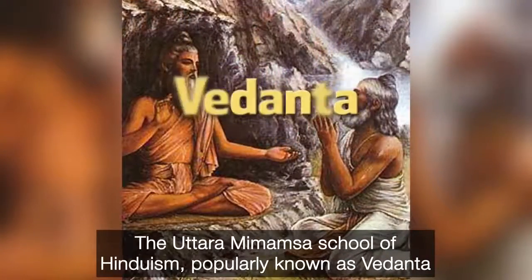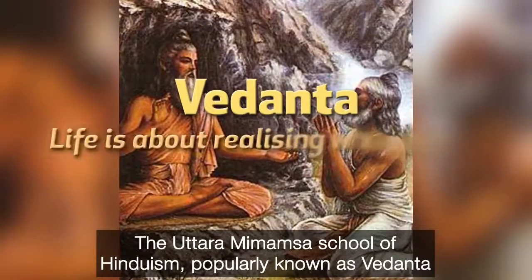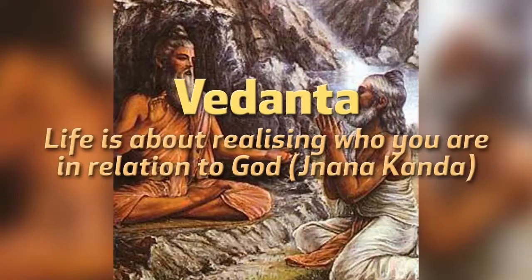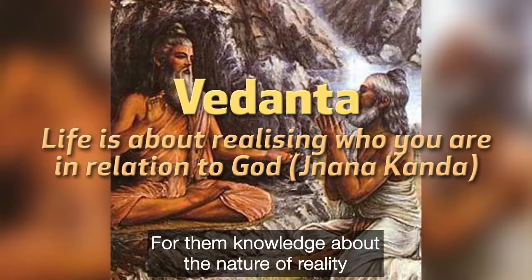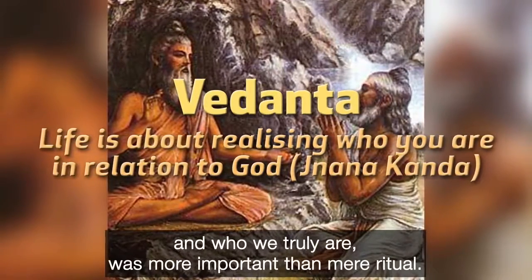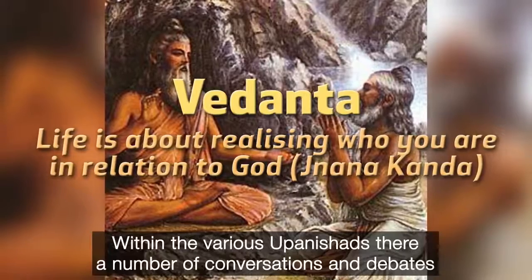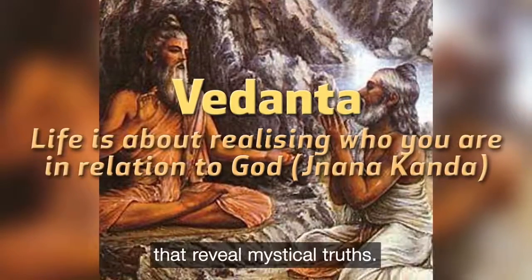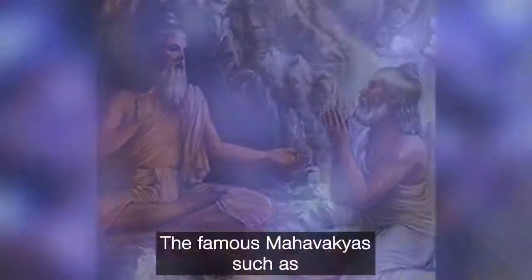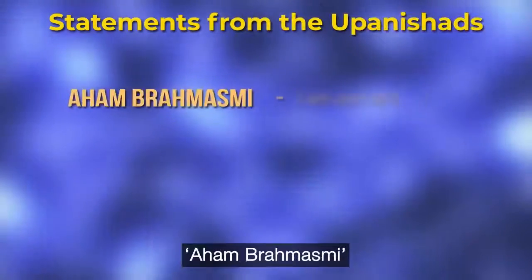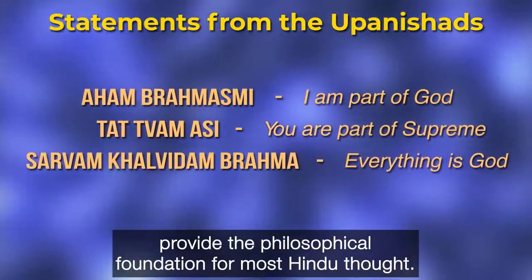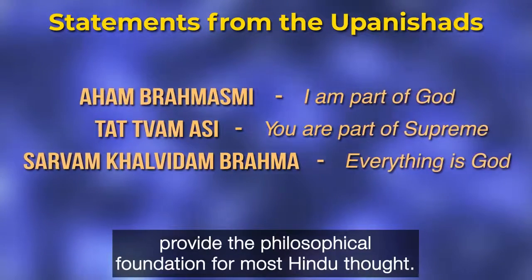The Uttara Mimamsa school of Hinduism, which is popularly known as Vedanta, gave greater importance to the Jnana Kanda. For them, knowledge about the nature of reality and who we truly are was more important than mere ritual. Within the various Upanishads, there are a number of conversations and debates that reveal mystical truths. The famous maha-vakyas such as Aham Brahmasmi, Tattva Masi, and Sarvam Khalvidam Brahma provide the philosophical foundation for most Hindu thought.